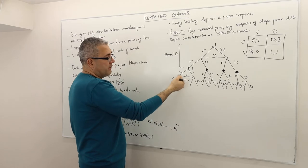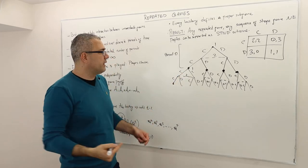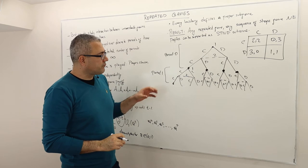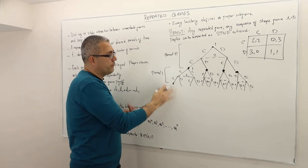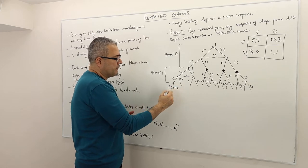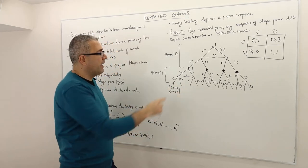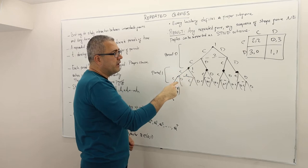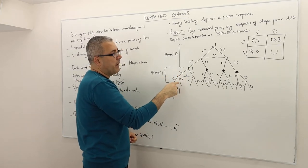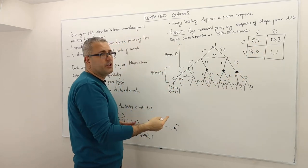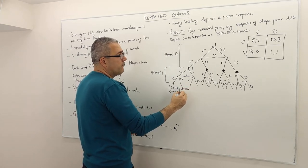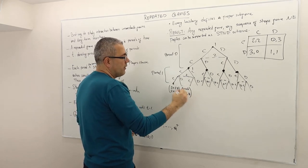For example, if the history is that in both periods players cooperate, the payoff in this path would be two plus two delta for player one, and two plus two delta for player two. Another example: if in period one they play CC and in period two they play CD, then in period one they both get two. In period two, player one gets zero and player two gets three. So that means two plus zero times delta for player one, and two plus three times delta for player two.